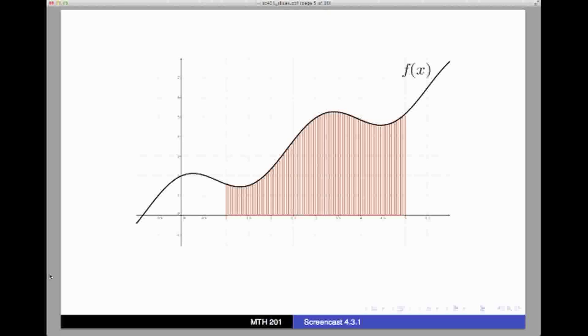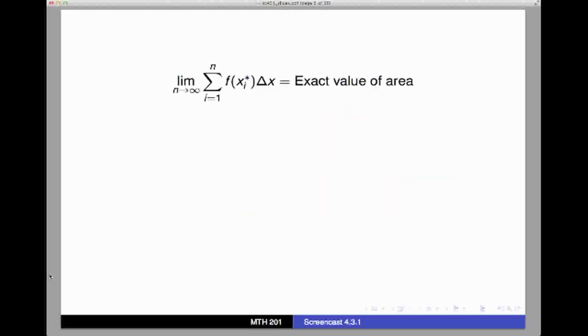Therefore, the limit of this Riemann sum, as n goes to infinity, would be a perfect estimate. In other words, it would be the exact value of the area under the velocity curve, otherwise known as the exact value of distance traveled.